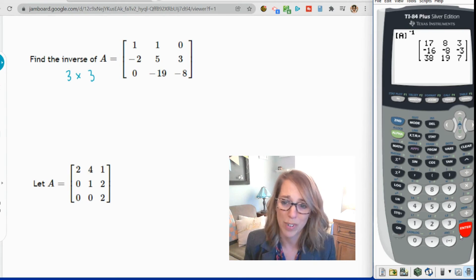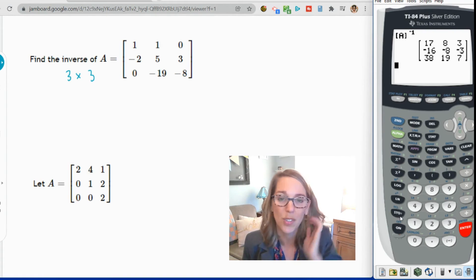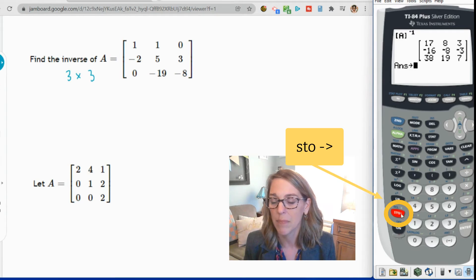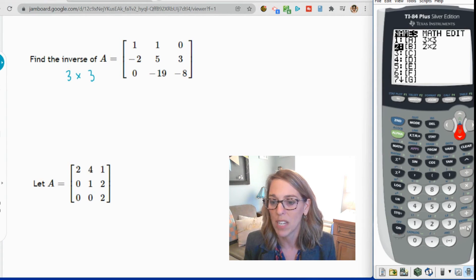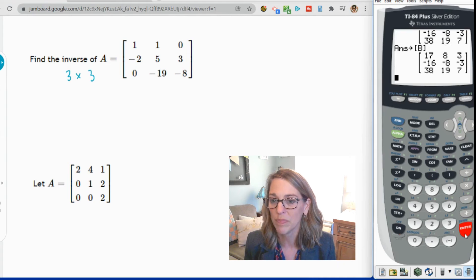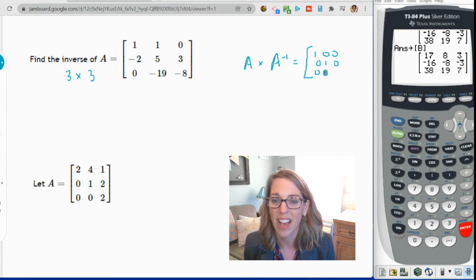So super nice and super easy. Let's go ahead and put this one into matrix B. I'm going to multiply those two together and then we should get the identity matrix back. I'm going to hit my store key and then I want to store it into, let's go second, matrix, and I'm going to choose matrix B to store this into. Okay, so I've got that stored into matrix B. Going over here, A times A inverse should be equal to the 3 by 3 identity matrix. So if I put these two in, I should get the identity.